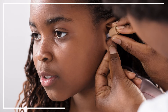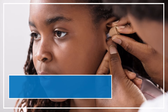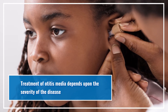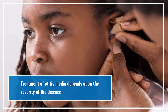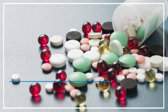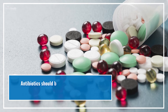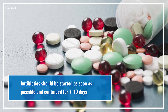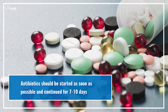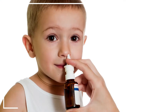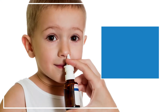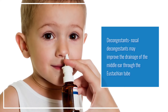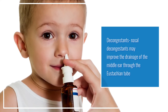Treatment of otitis media depends upon the severity of the disease. Some of the possible treatment options include antibiotics, which should be started as soon as possible and continued for 7 to 10 days. Decongestants — nasal decongestants may improve the drainage of the middle ear through the eustachian tube.